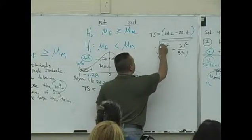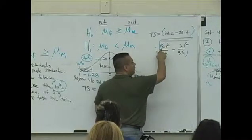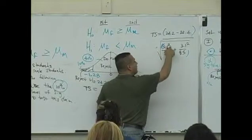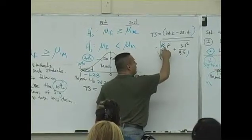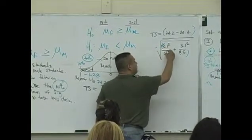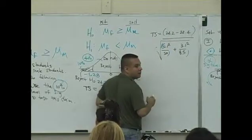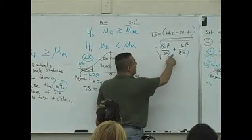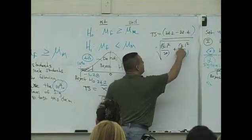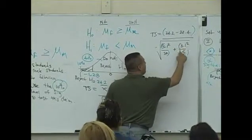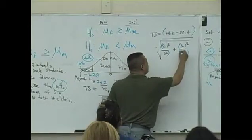Put a second set before the 5.1 squared, and enter the 5.1 squared divided by 50, close that parentheses. Plus, open the parentheses here, 3.1 squared divided by 85, and close that parentheses.